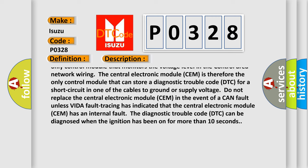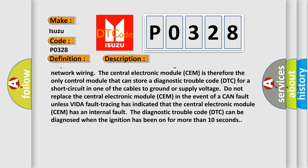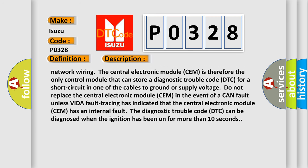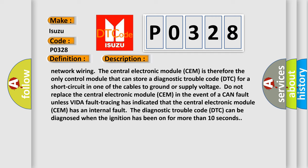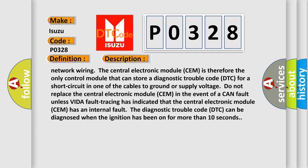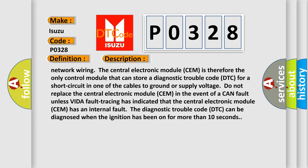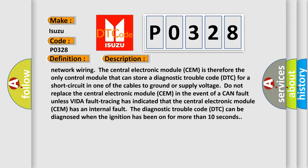Do not replace the central electronic module CEM in the event of a CAN fault unless VIDA fault tracing has indicated that the central electronic module CEM has an internal fault. The diagnostic trouble code DTC can be diagnosed when the ignition has been on for more than 10 seconds.